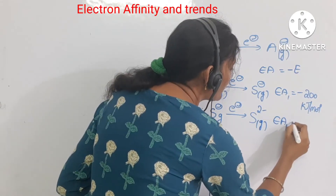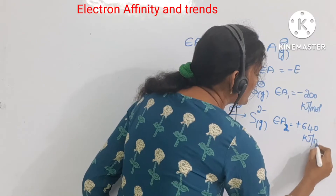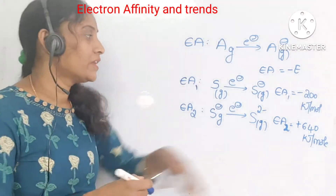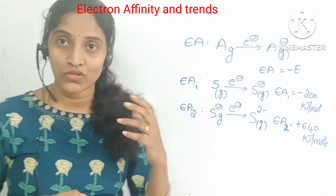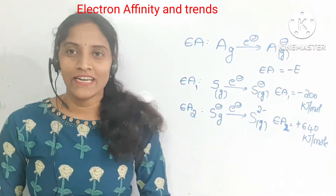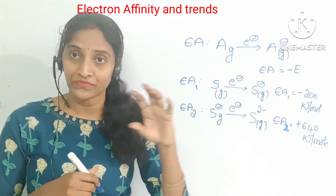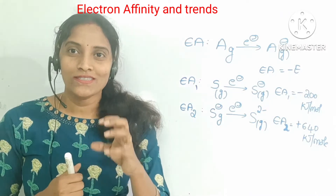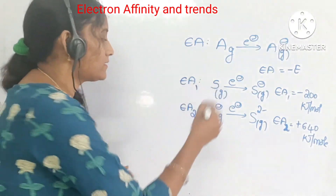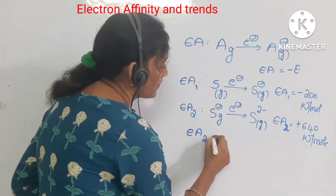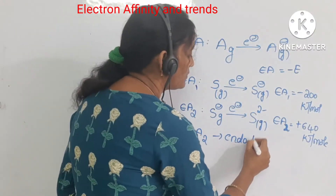One thing you are going to observe here: Ea2 is equal to plus 640 kilojoules per mole. What is the variation? Ea1 is an exothermic reaction, so energy is released and it is always indicated with negative energy. But for Ea2, it is positive energy. The reason is that Ea2 is always an endothermic reaction. The detailed reason will be discussed in trends of electron affinity. So this Ea2 is endothermic — that means we need to provide some energy to add this electron.